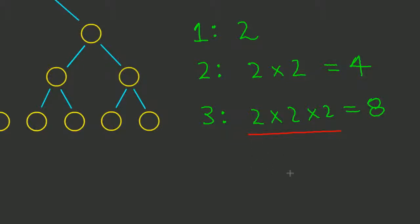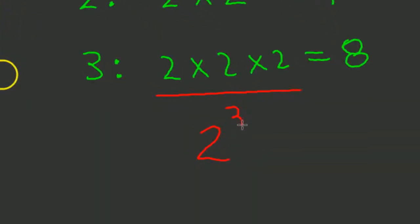To write that in a more compact fashion, we write a two, which is the number that's being multiplied over and over and over again, with a three, a number that we refer to as an exponent.